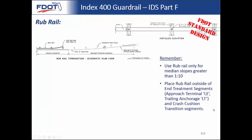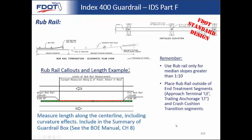Rub rail is similar to pipe rail in terms of call-out: call out begin rub rail and end rub rail at a station, measure the length along the centerline accounting for any roadway curvature, and include it in the summary of guardrail box. Keep the rub rail outside of approach terminal and trailing anchorage segments so that the hardware can function correctly without any interference.